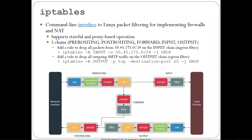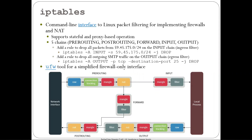Here's another example: add a rule to drop all outgoing SMTP traffic on the output chain. Say this machine should never be used to send spam — there's no legitimate use for email on it — so you put a filter on the output chain that says if the destination port is the mail port 25, just drop it. UFW is a more user-friendly alternative tool for firewall-only operation. It won't allow you to implement a NAT device, but for simplified firewall operation on Linux, UFW is much more user-friendly.